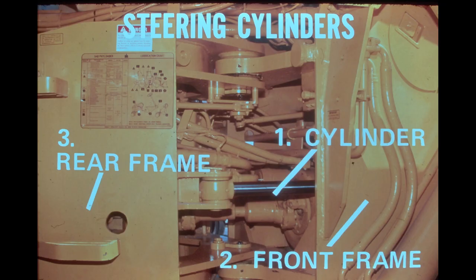Two powerful hydraulic steering cylinders with a bore and stroke of 4 by 17 inches provide the force necessary to steer the 540. The right cylinder is shown in the photo. The head end of each cylinder is pin-mounted inside the front frame and the rod end is pin-mounted to the rear frame. When the steering wheel is turned, hydraulic fluid is directed by the steering control valve to the rod side of one cylinder and the head side of the other cylinder. This causes one cylinder to extend and the other to retract, turning the machine.